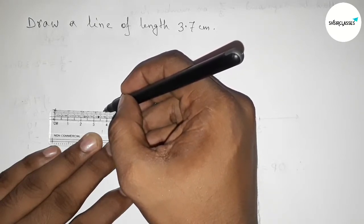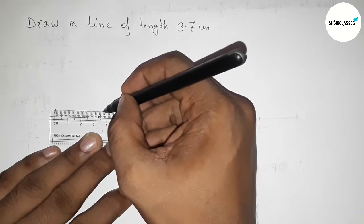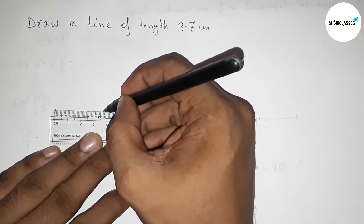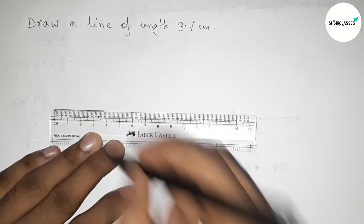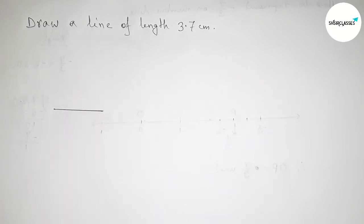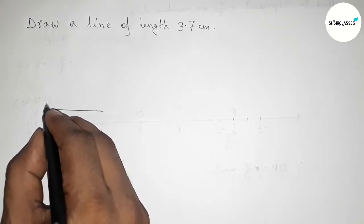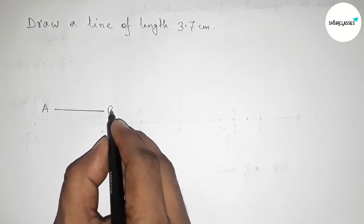So marking this and joining this line. Okay, so taking here point A and here B.